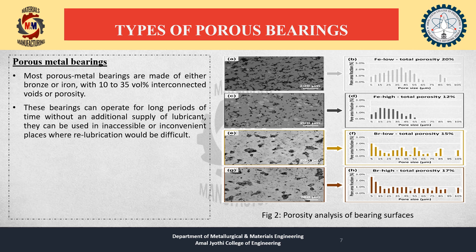Figure 2 shows the porosity analysis of bearing surfaces. The A diagram shows the microstructure of low iron content bearings, which shows a total porosity of 20%. The C diagram shows the porosity microstructure of high iron content bearings having a total porosity of 12%. This shows that when the iron content is high, total porosity decreases, and when the iron content is low, total porosity increases.